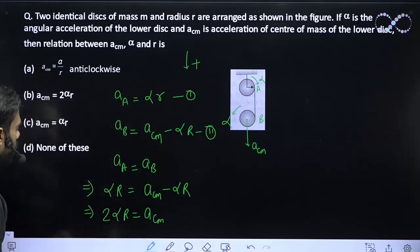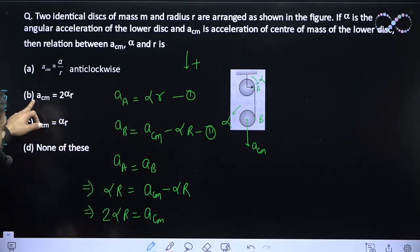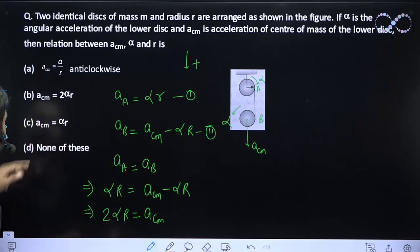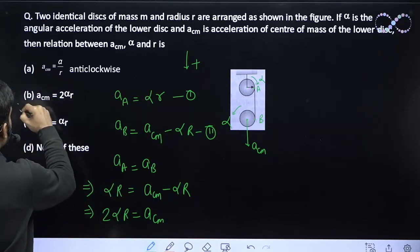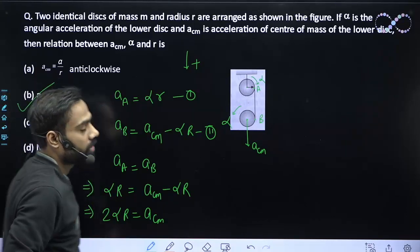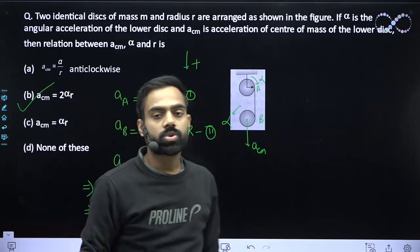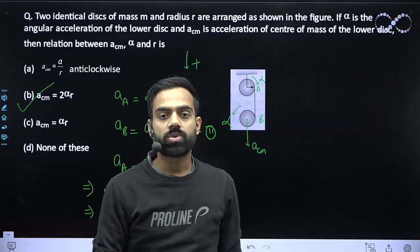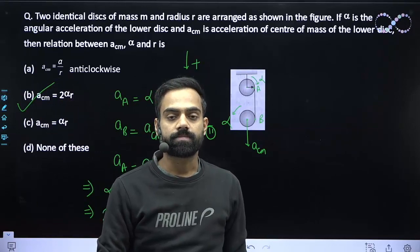So the relation we get is a_CM equals 2 alpha r. Looking at the options, option B states the acceleration of the center of mass equals 2 alpha r, so option B is correct. I hope you understood this question, students.